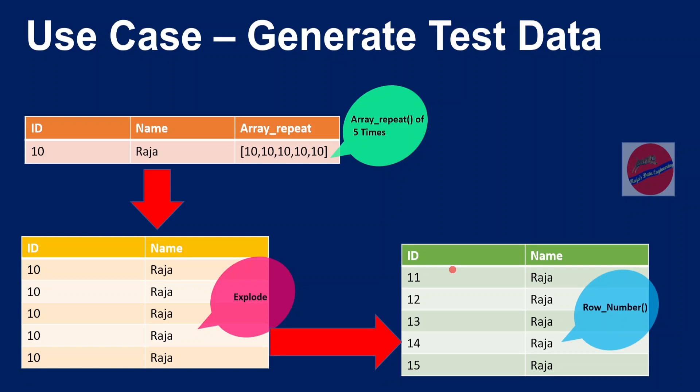In stress testing we check what is the breakpoint — up to what point the solution can accept the data given a certain cluster configuration. In performance testing, we check how much time it takes to process a thousand records, one million records, or one billion records. To compare performance, we need to generate a huge amount of test data, and this process can be used for that.